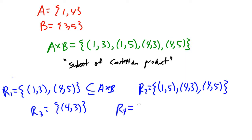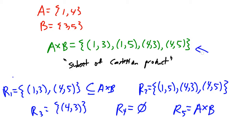Let's take another one: R4 equals the empty set. Because remember, the empty set is a subset of every set — therefore the empty set is a subset of the Cartesian product, and that too is a valid relation. Let's take the other extreme: R5 equals the whole enchilada, A cross B. That too is a relation. So any subset of the Cartesian product is a relation.